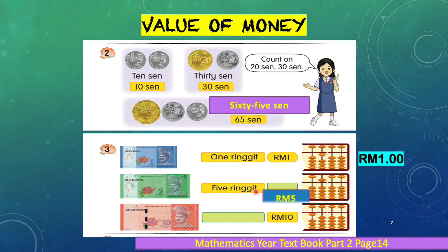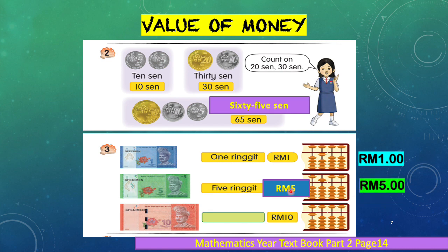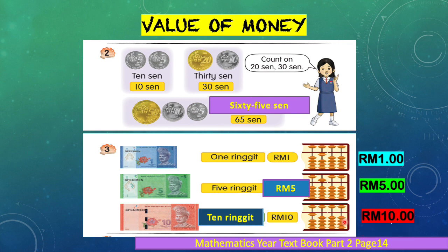For the five ringgit note, on the abacus we can show it as 5.00. For the ten ringgit note on the abacus, we show it as 10.00 — that means ten ringgit.